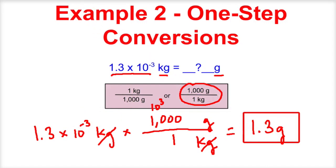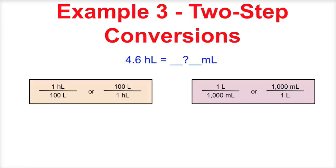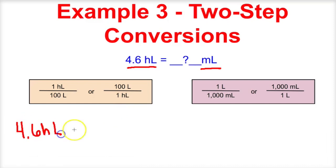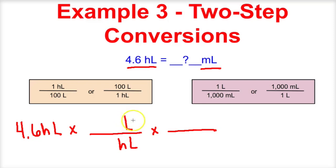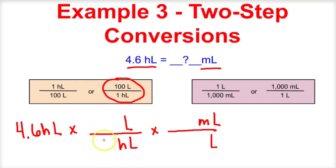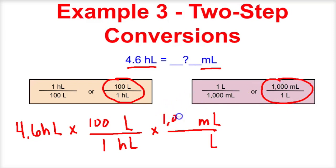Let's take a look at one last example in which we use a two-step dimensional analysis approach. We have 4.6 hectoliters and we want to figure out how many milliliters this is — so this is going to be a two-step conversion problem. We have 4.6 hectoliters, and we first want to cancel out hectoliters and convert to liters. After that, we'll cancel out liters and convert to milliliters. We know that one hectoliter is 100 liters, and we know that there are 1,000 milliliters in one liter.